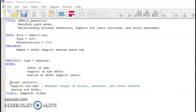Under the model statement, you can have a statement that says model indirect. And then you can say support, IND, and age, and sentiment, IND, defer. And what this does, it requests the output of the direct, the indirect, and the total effects, comparing support and age and sentiment with deference.